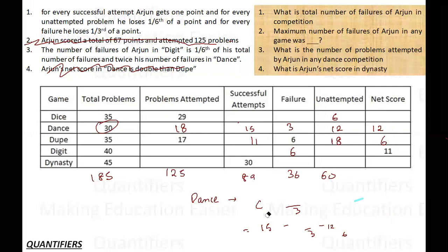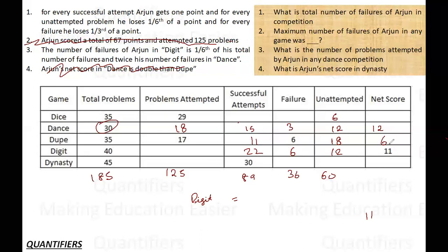In a similar manner, let me fill in the data for the Digit game. Digit net score = 11, failures = 6. The total attempted must account for 34 remaining. Trying unattempted = 18 gives correct = 16. Checking: 16 − 6×(1/3) − 18×(1/6) = 16 − 2 − 3 = 11. This satisfies the condition. So Digit: correct=16, wrong=6, unattempted=18, score=11. Complete.